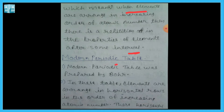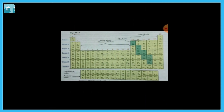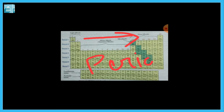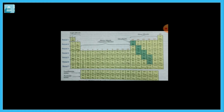Now let me talk about the Modern Periodic Table itself. I will show you the table. This is your Modern Periodic Table. If you go from left to right, these horizontal rows are called periods. Moving from left to right — these horizontal rows — are called periods. And if you go from top to bottom, the vertical columns are called groups.